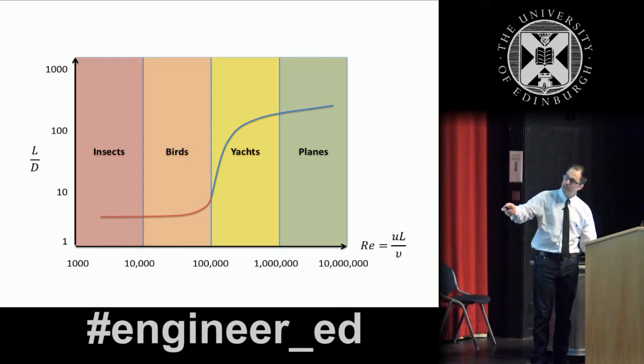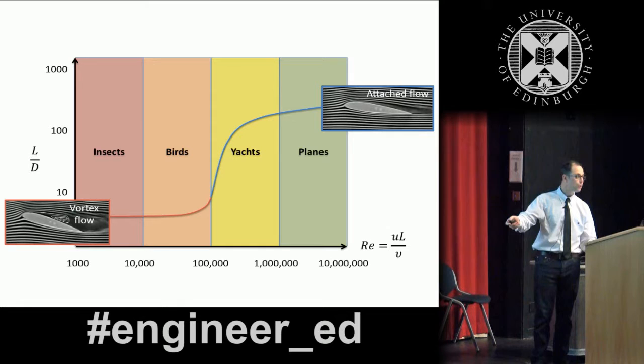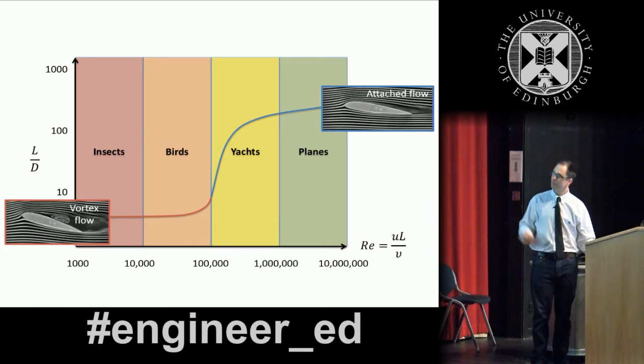If you look at planes, yachts, and then birds and insects, there is a continuous curve which goes from the attached flow to a region where actually the best way forward is to generate vortices and to keep these vortex stably attached to your sail or to your wing.